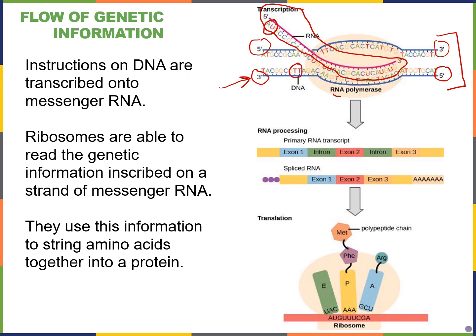That transcription process is completed by RNA polymerase. We'll see that in eukaryotes, our RNA molecule actually has to be processed before we get our final messenger RNA. Then ribosomes come into play, where they're going to read our messenger RNA and translate that into a polypeptide sequence forming our protein.